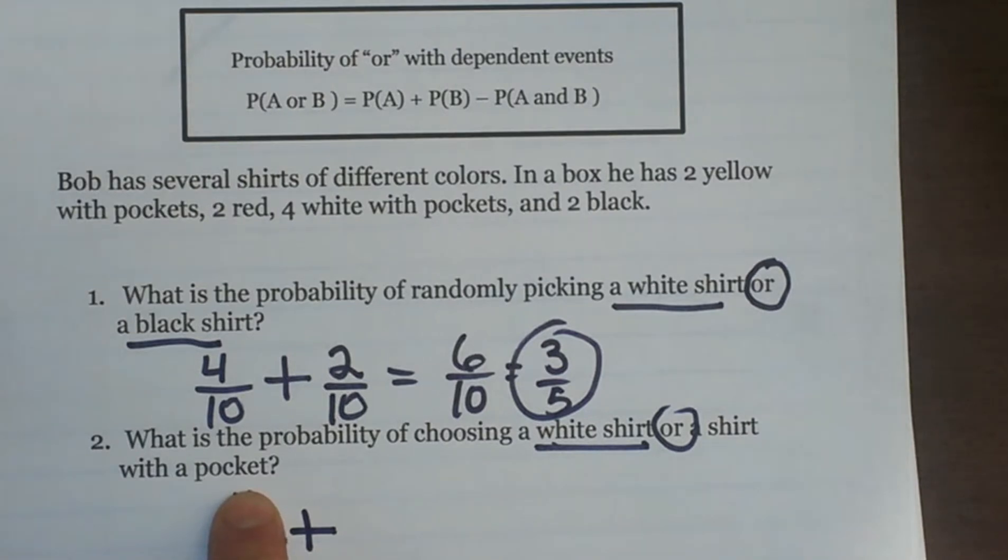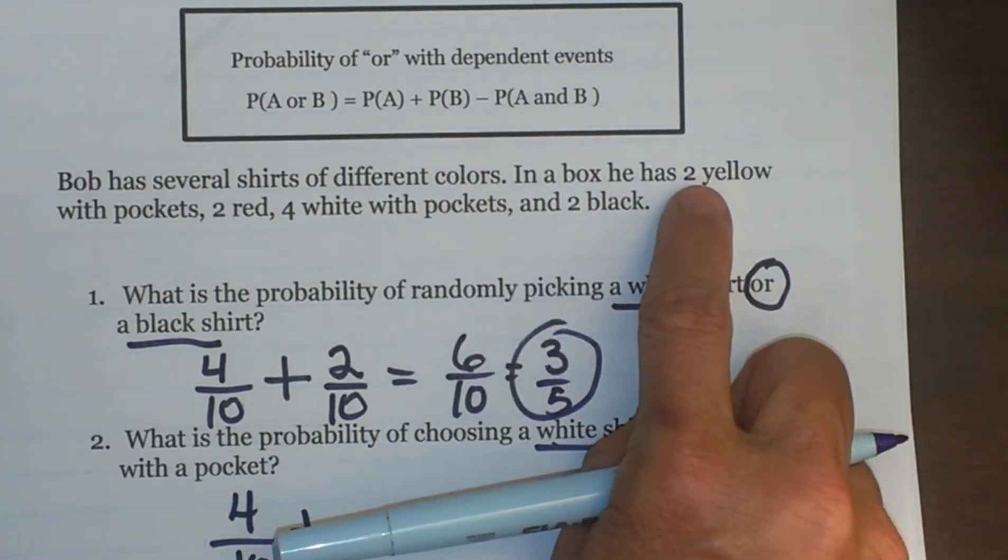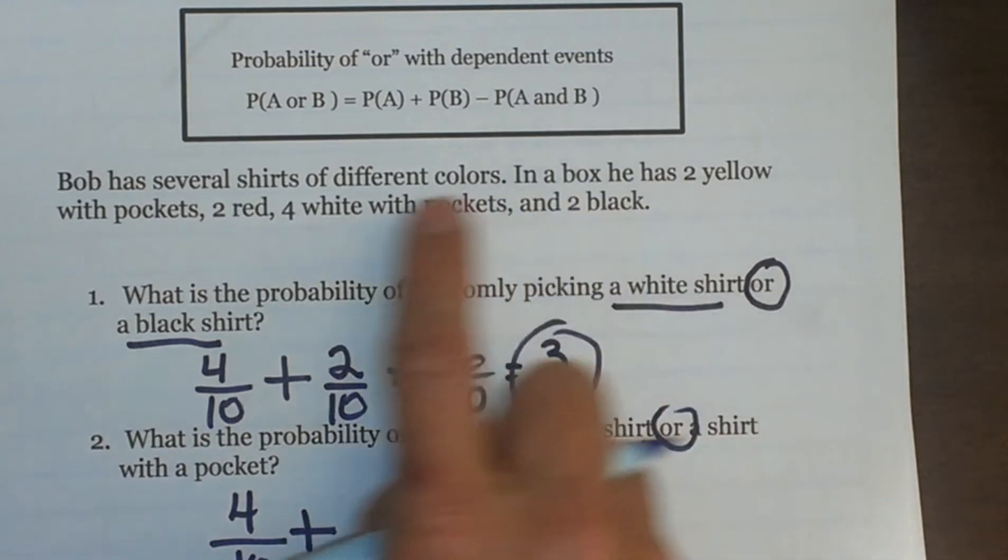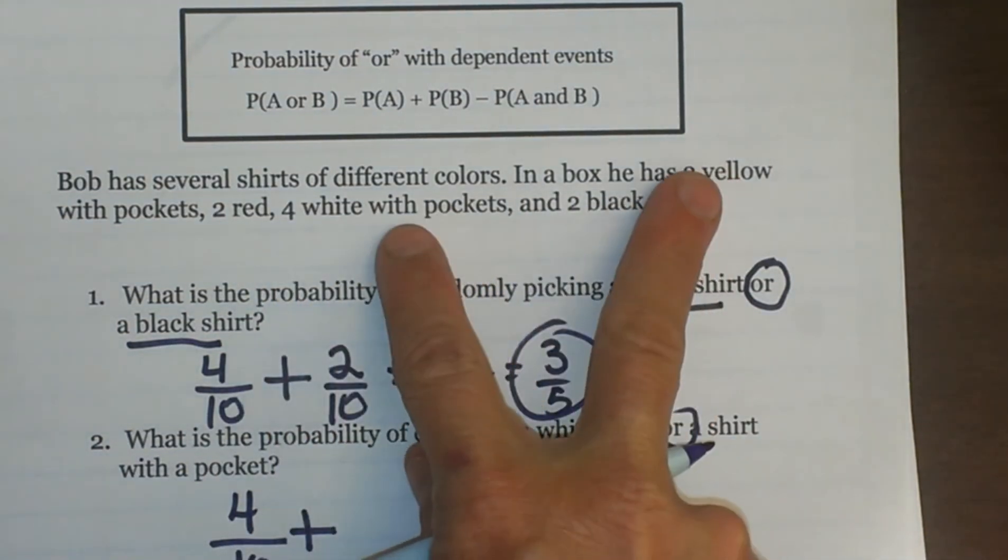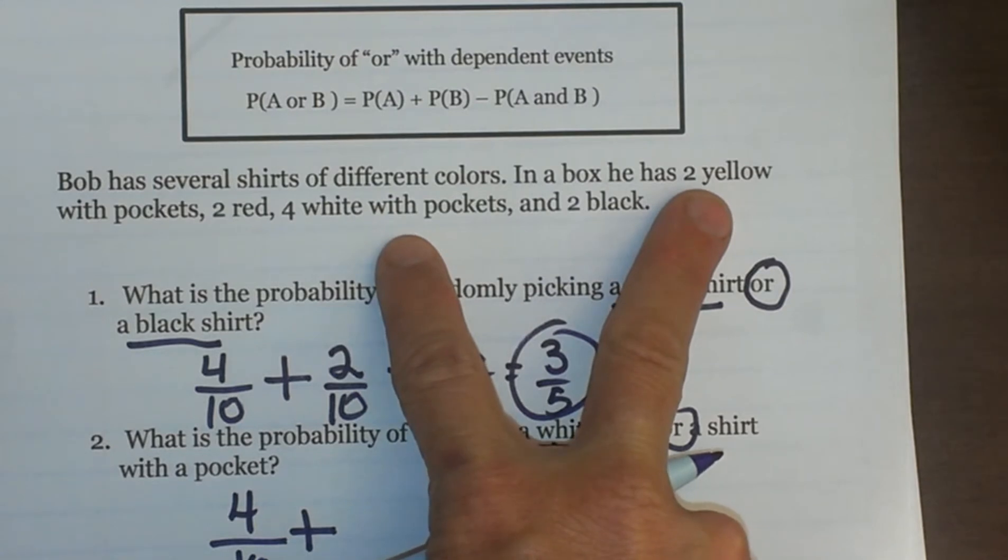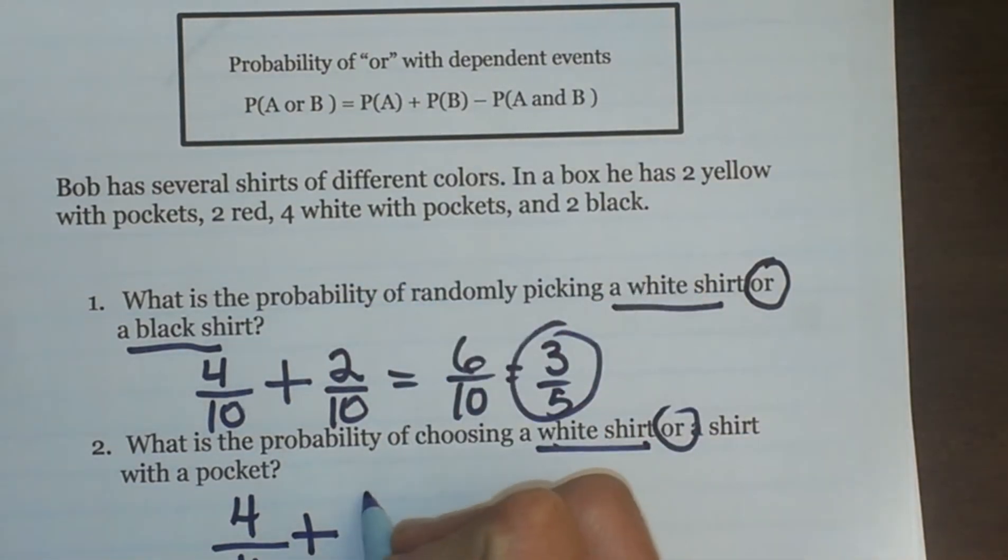Well how many shirts have pockets? Well, two yellows have pockets and four whites have pockets. So together that makes how many with pockets? Six tenths.